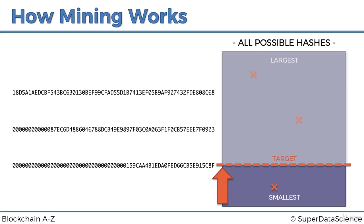The important thing to know is this is completely arbitrary — there is no economic, logical, mathematical, or cryptographic reason for it. It's just a way to put hurdles in the way of miners, to create a challenge for them to solve — that's the only reason for this target. So if a miner found a hash above the target, they would not be allowed to create a block with it. But if they found a hash below the target, they'd be welcome to create the block — that's when they'd be considered the miner who mined the block.